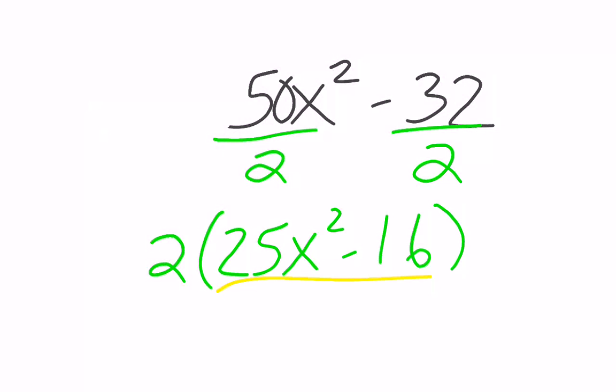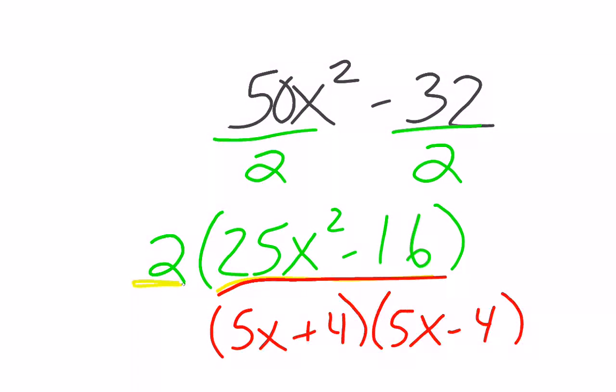And then what I have left is 2 terms, so I want to check for a difference of squares. We have subtraction, we have perfect squares, we have even exponents. So that means that I can factor the inside as 5x plus 4 and 5x minus 4. Being careful to remember my GCF goes out front. So now we've factored it completely.